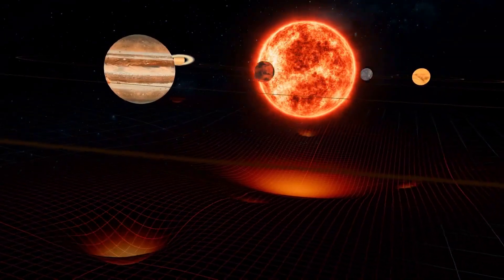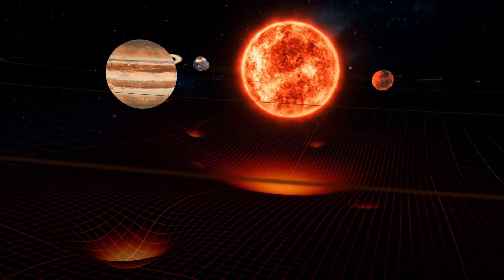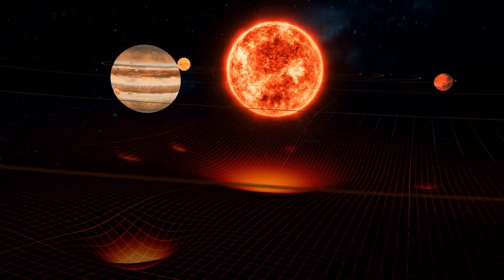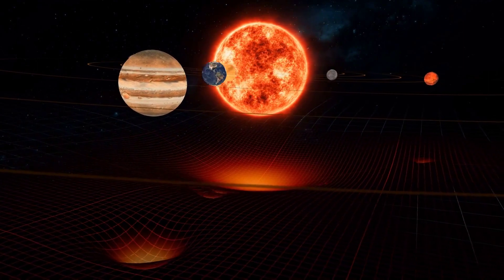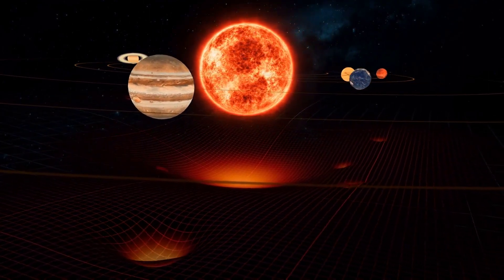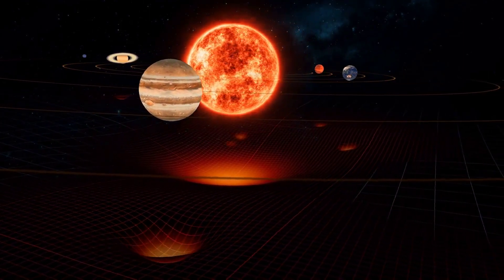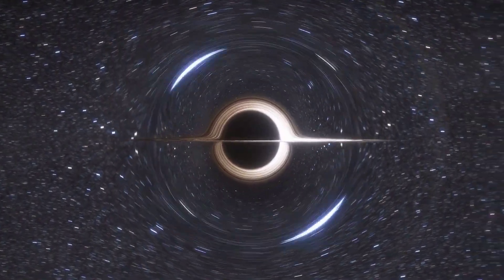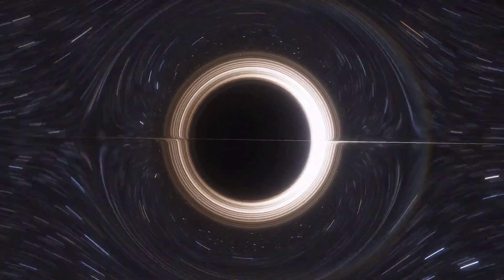Imagine space-time as a stretched sheet. If you place a heavy object, like a bowling ball, in the middle, the sheet curves around it. Likewise, massive celestial bodies, like the sun, bend space-time around them. As we approach a black hole, this curvature becomes extremely pronounced.